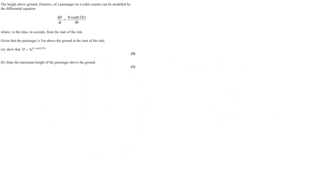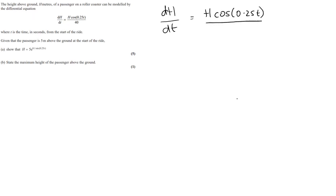The first question: the height h meters of a passenger on a roller coaster can be modelled by a differential equation. Previously you would have been expected to show that dh/dt equals a given expression, but this time you are only expected to solve it. Writing it as dh/dt equals h·cos(1.25t) all over 40.